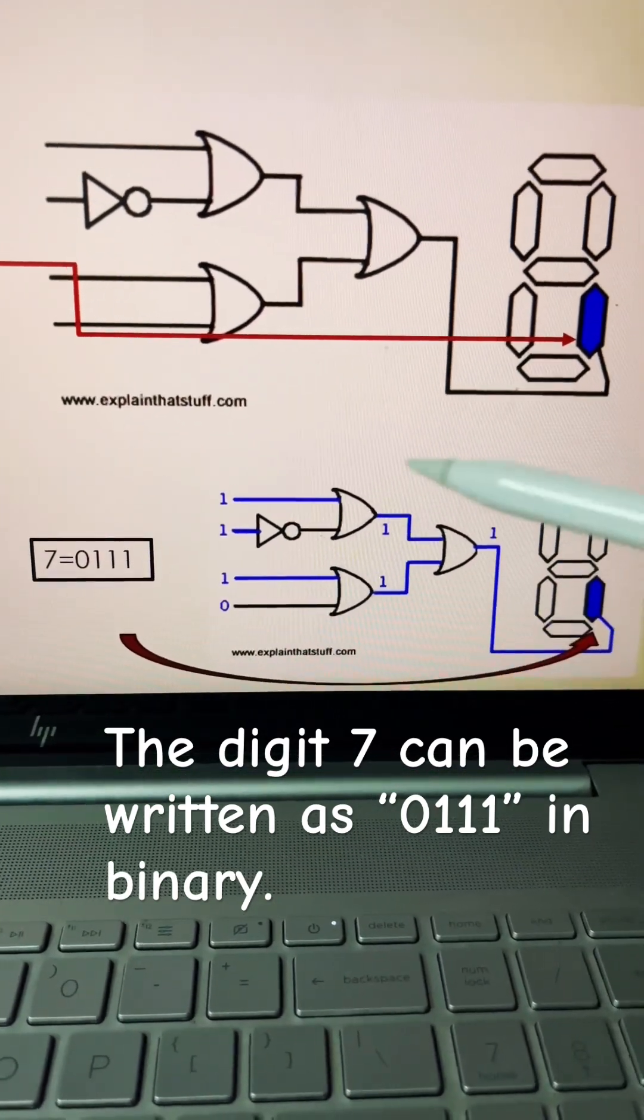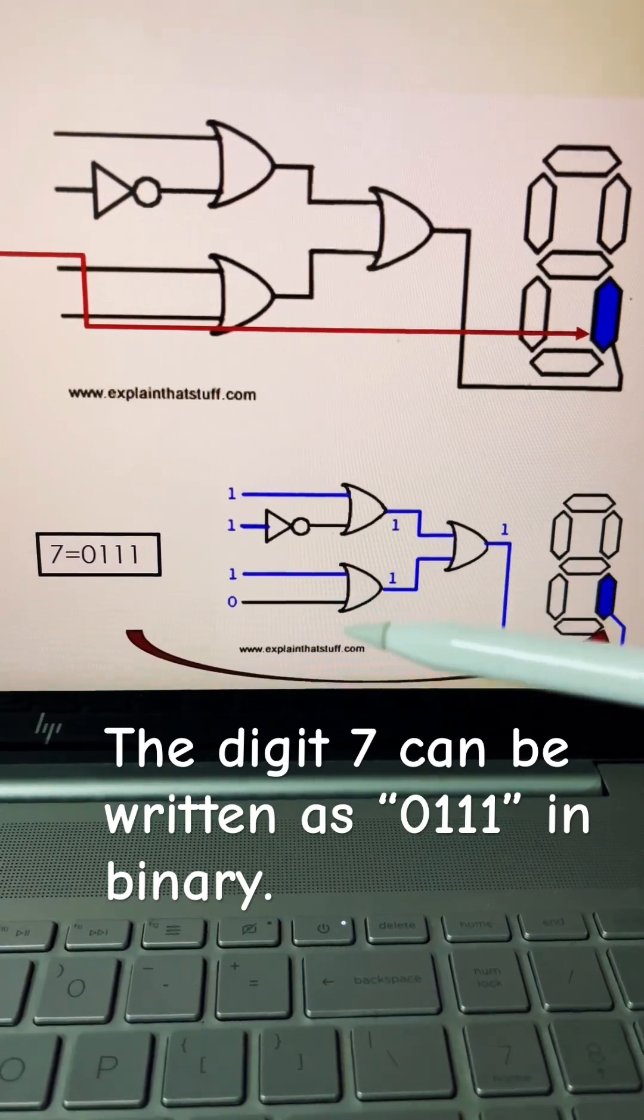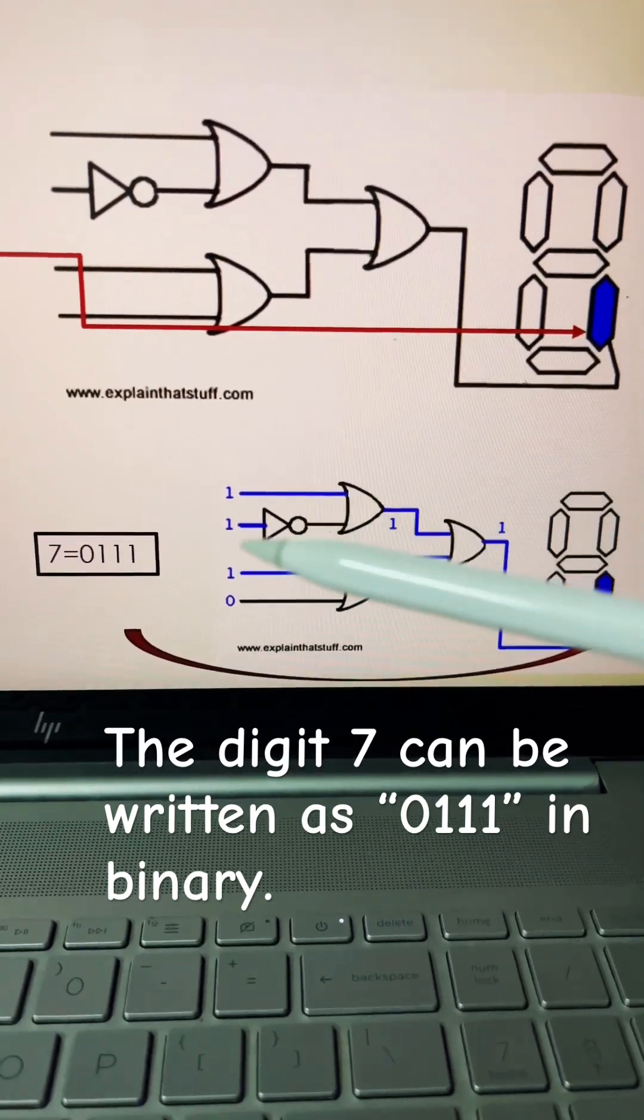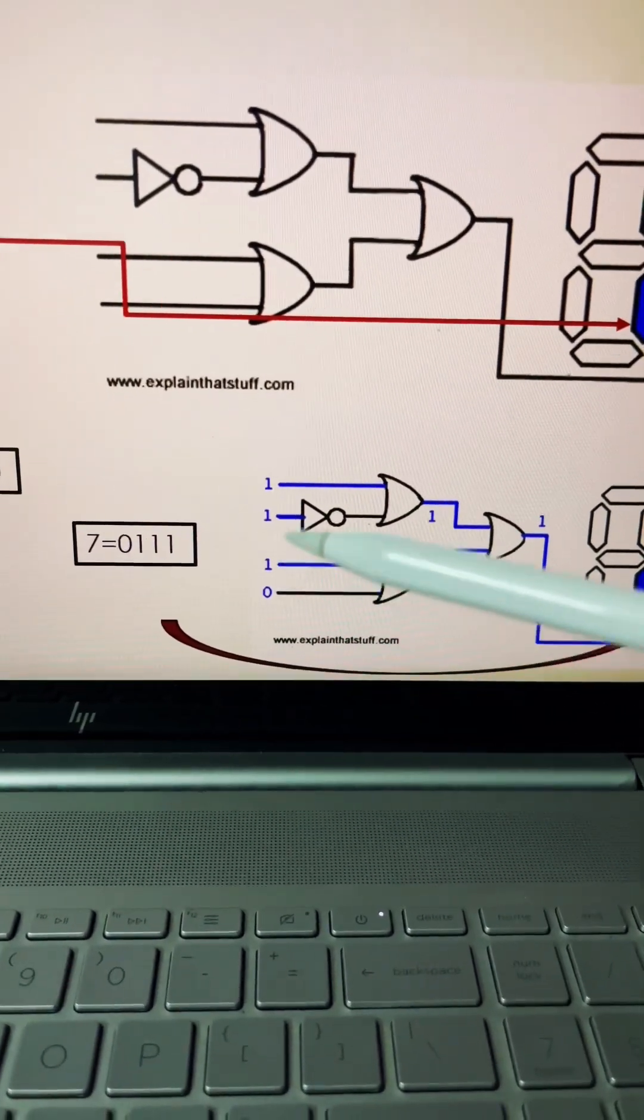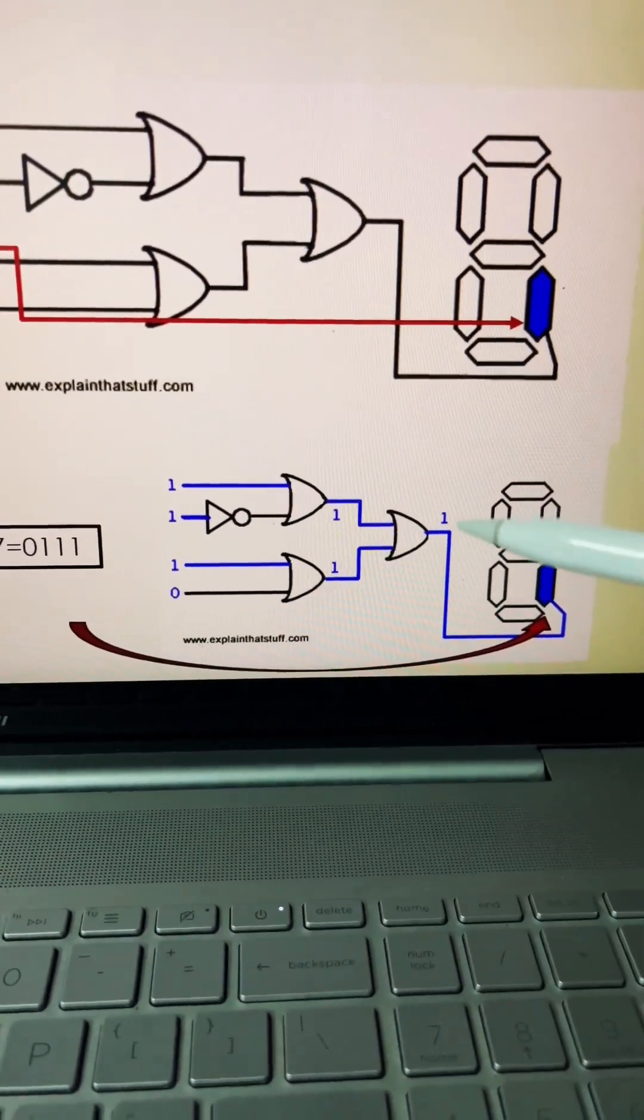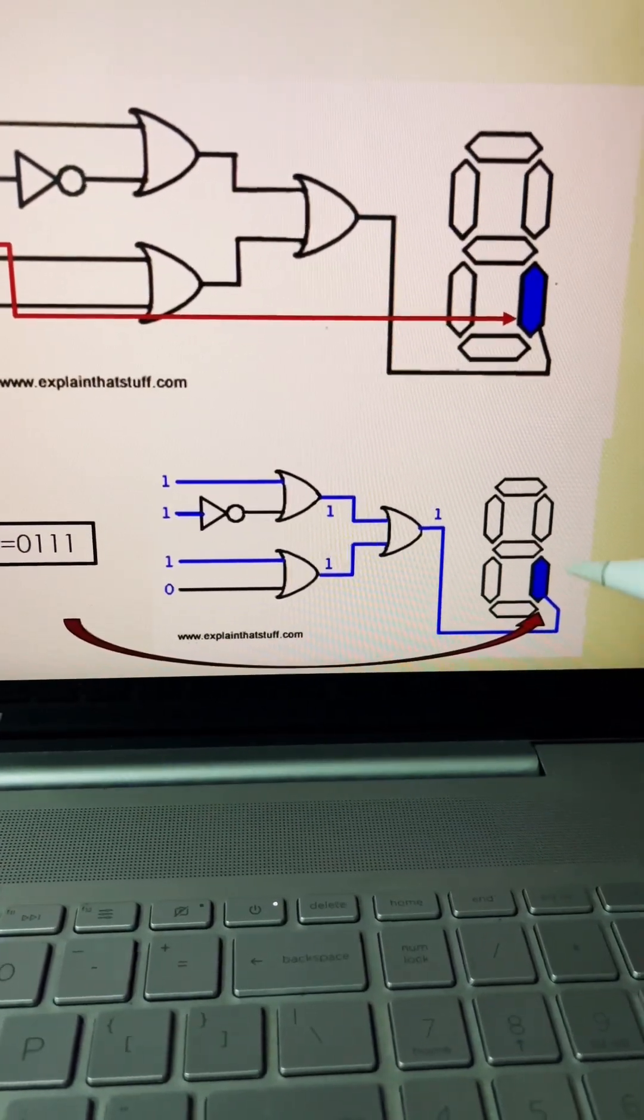So this is the basic combination of logic gates. You have an OR gate. You have an OR gate with an inverter connected to an OR gate over here. When it's 0, 1, 1, the output is 1. Hence, this segment is turned on.